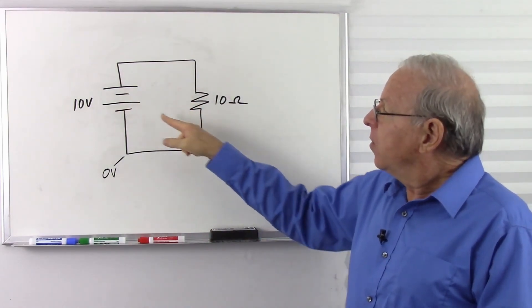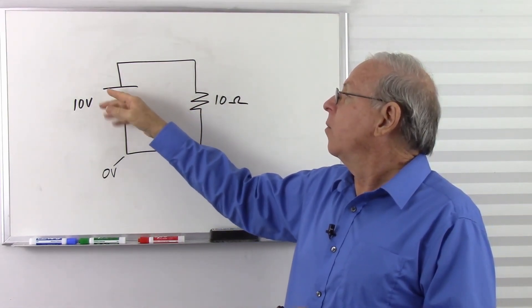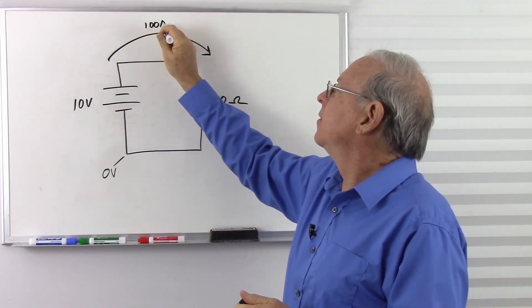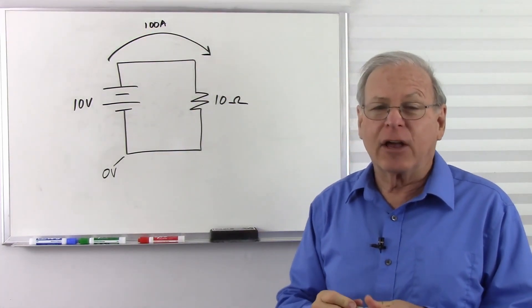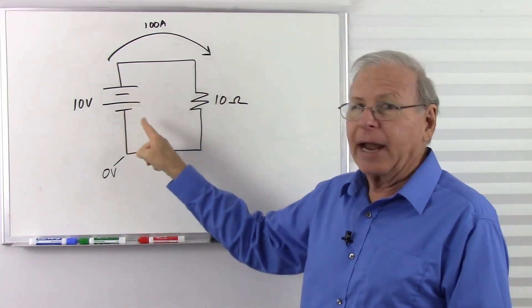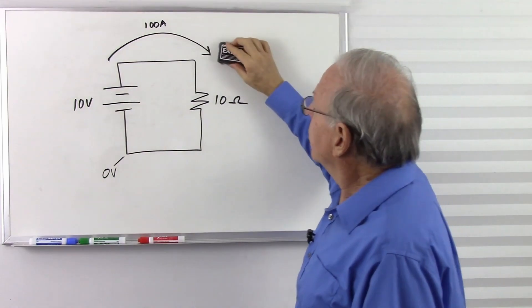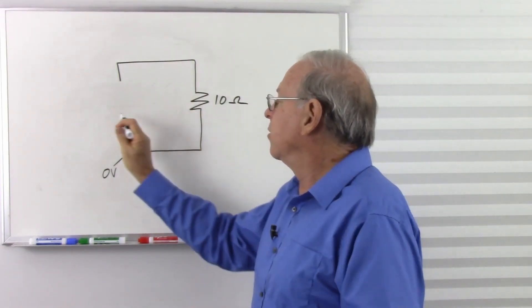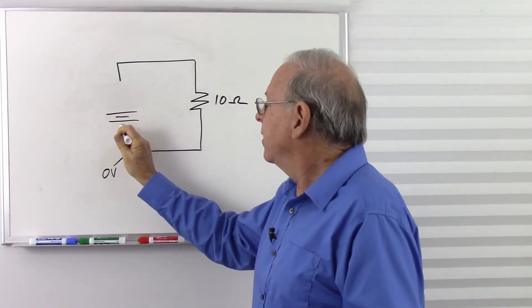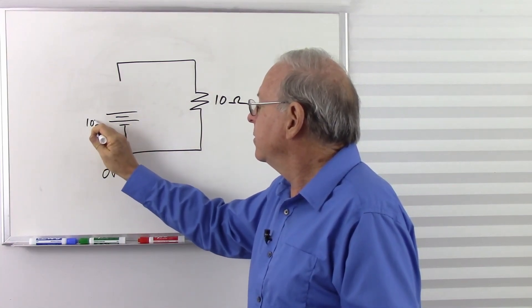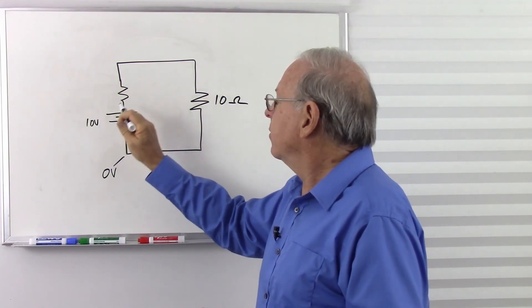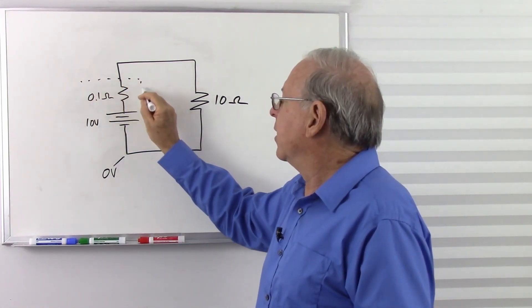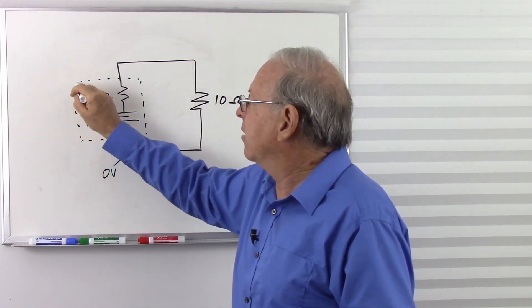Let's start with looking at the battery. We assume that this battery is going to deliver 10 volts no matter how much current I take from it — even 100 amps. That's not going to happen in the real world, because a real world battery has built-in resistance. So that battery actually looks like a voltage source with a resistor in series — let's put just a tenth of an ohm — with a dotted line around it to remind us that's what's inside the battery.